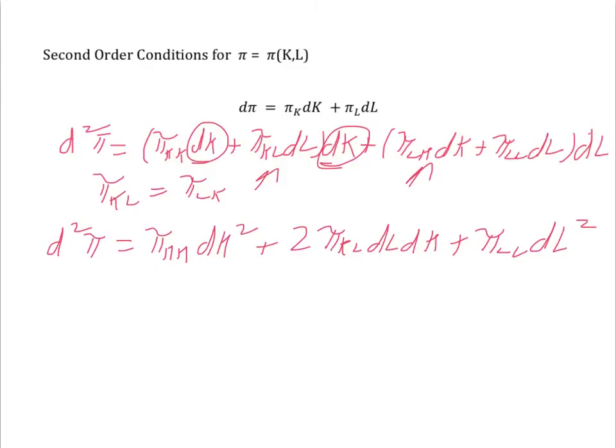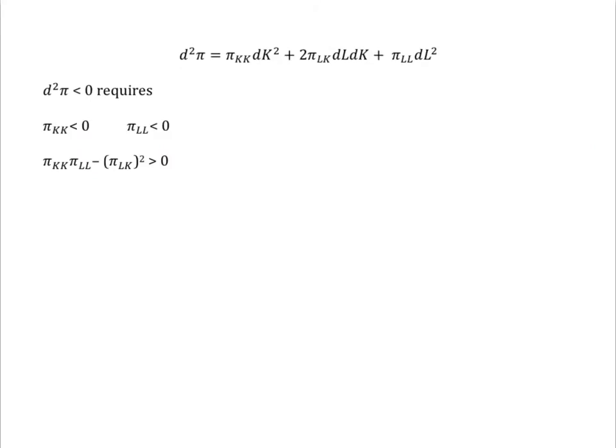We need to make sure that the second differential is negative, no matter which direction I move. This concavity condition will be met if Pi KK is less than zero. If the only thing I'm changing is K, I need to make sure that that slope becomes diminishing. Or if Pi LL is negative, I need to make sure that if I just move in the L direction, that the curve diminishes. Or I have to ensure that moving in both directions, I'm still moving in a negative direction, and that will occur if this third condition is met.